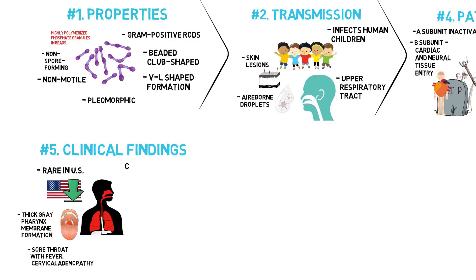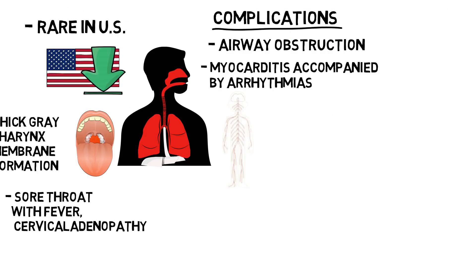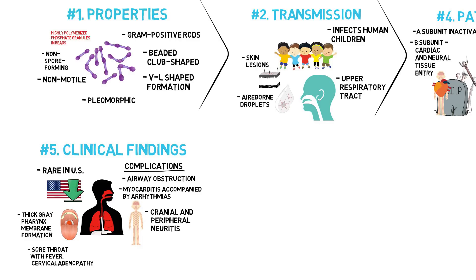There are three prominent complications. Number one, extension of the membrane to the larynx and trachea causing airway obstruction. Number two, myocarditis accompanied by arrhythmias and circulatory collapse. Number three, nerve weakness or paralysis, especially of the cranial nerves, as well as peripheral neuritis affecting the muscles of the extremities.